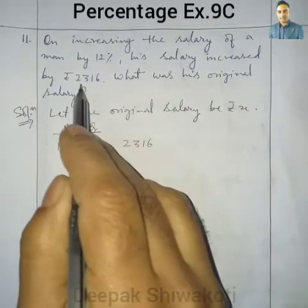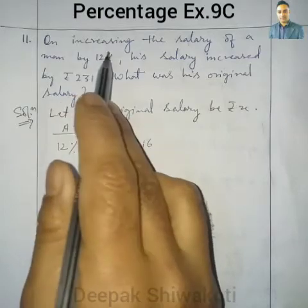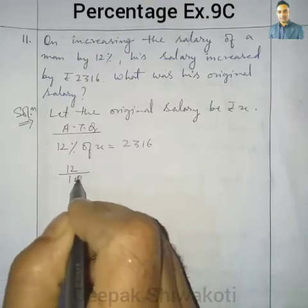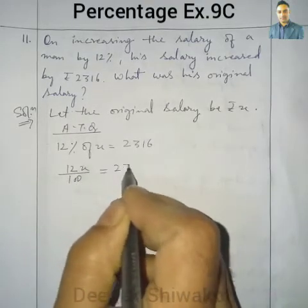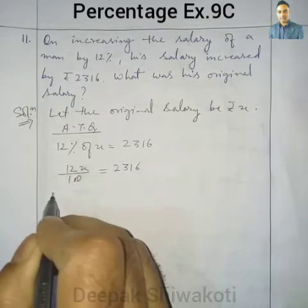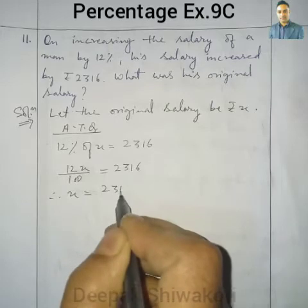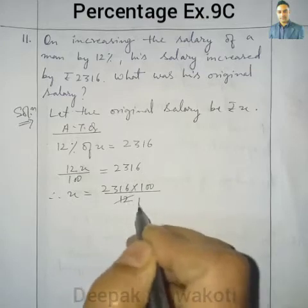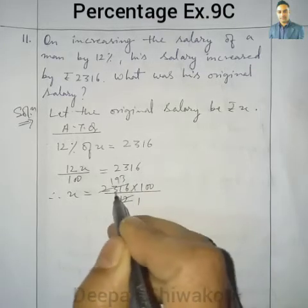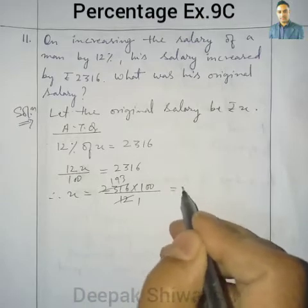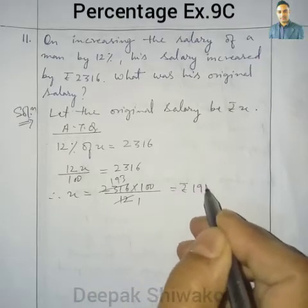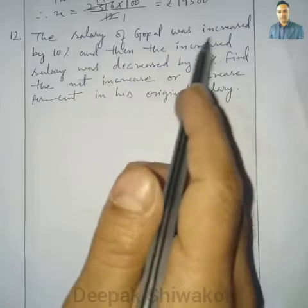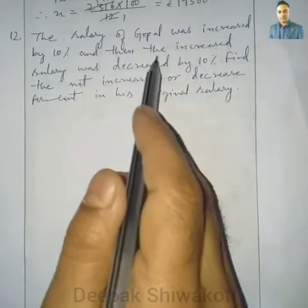So these two are equal: 12x by 100 equals 2,316. Therefore x equals 2,316 into 100 divided by 12. Cancelling, 12 ones are 12, and 193 — we get 2,316. So the original salary is rupees 19,300.